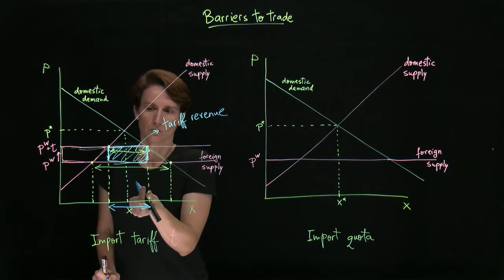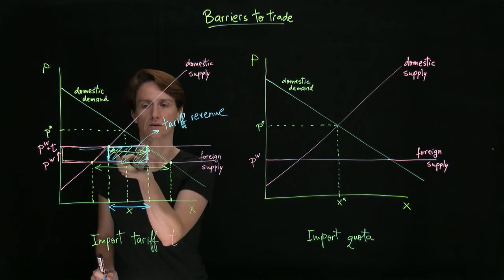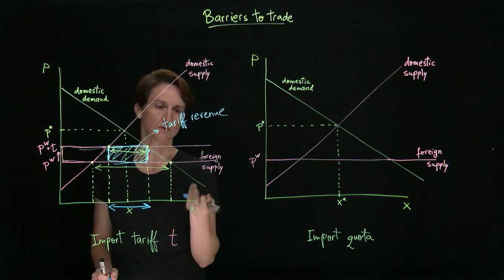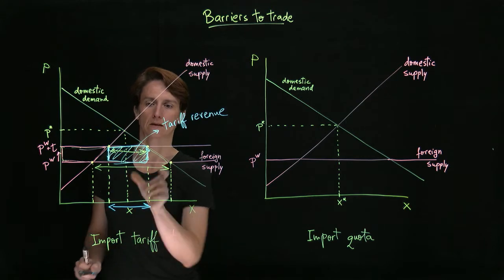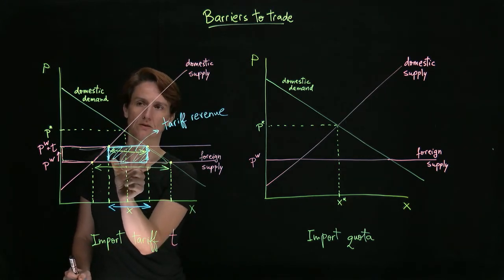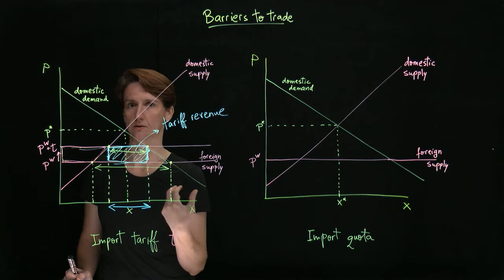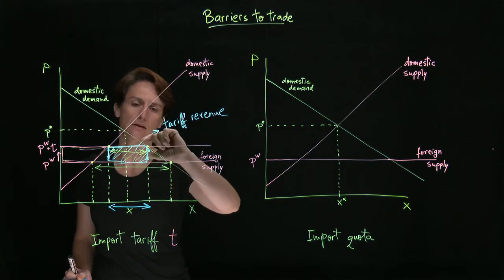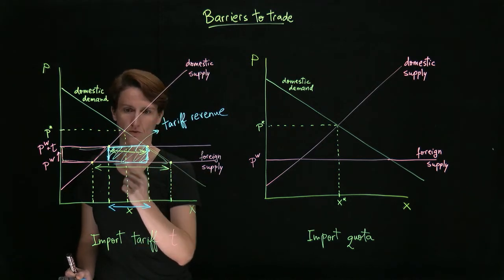Where's that coming from? Well, it's coming directly from the lost consumer surplus of domestic consumers. These are units that consumers were buying before and are still buying now that there's a tariff. However, they're paying more for each one of those units.